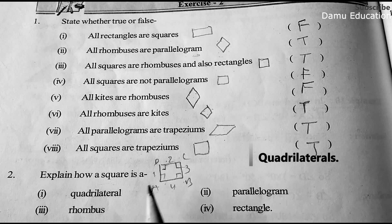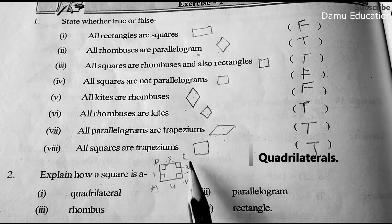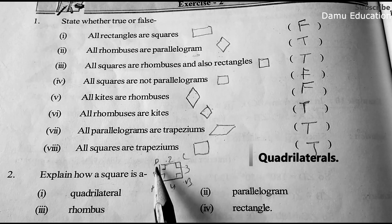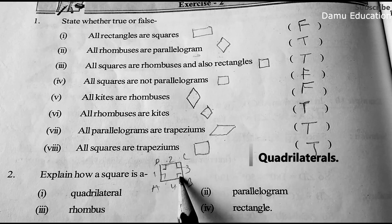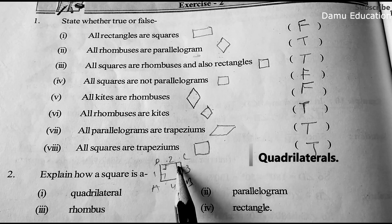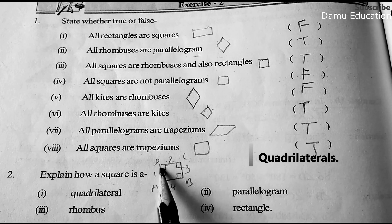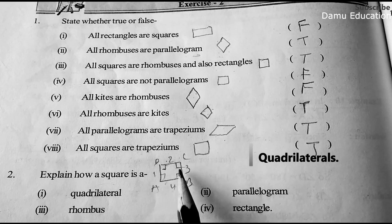A square is a rhombus because in a rhombus all sides must be equal. In a square, AB, BC, DC, and DA are all equal. Also, opposite angles are equal to each other, and the diagonals bisect each other at right angles.